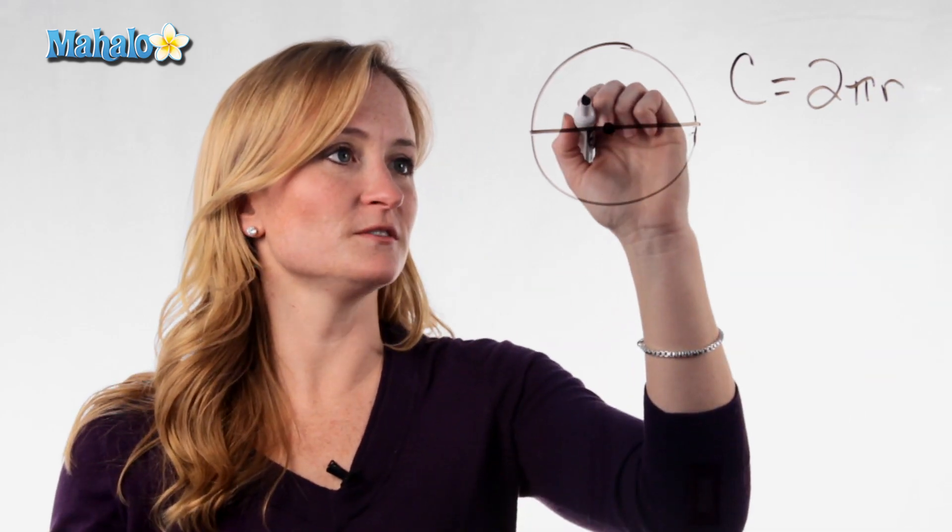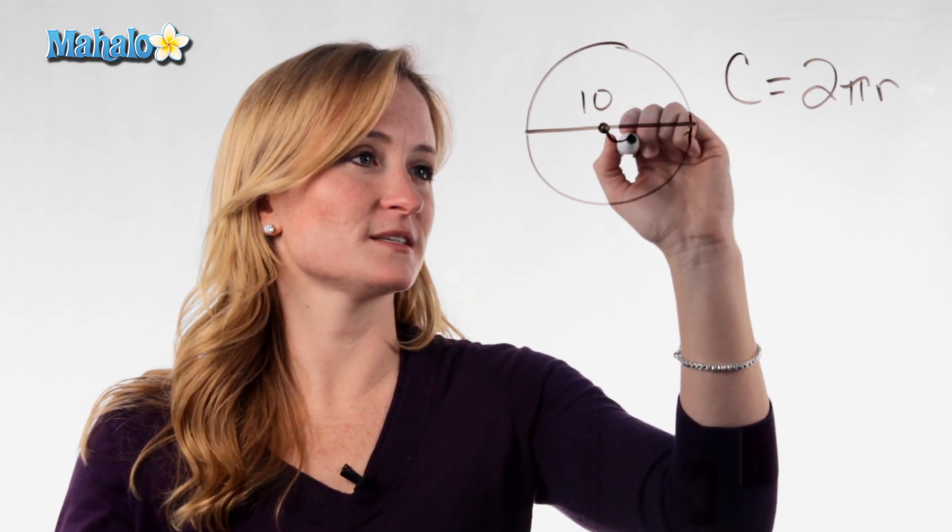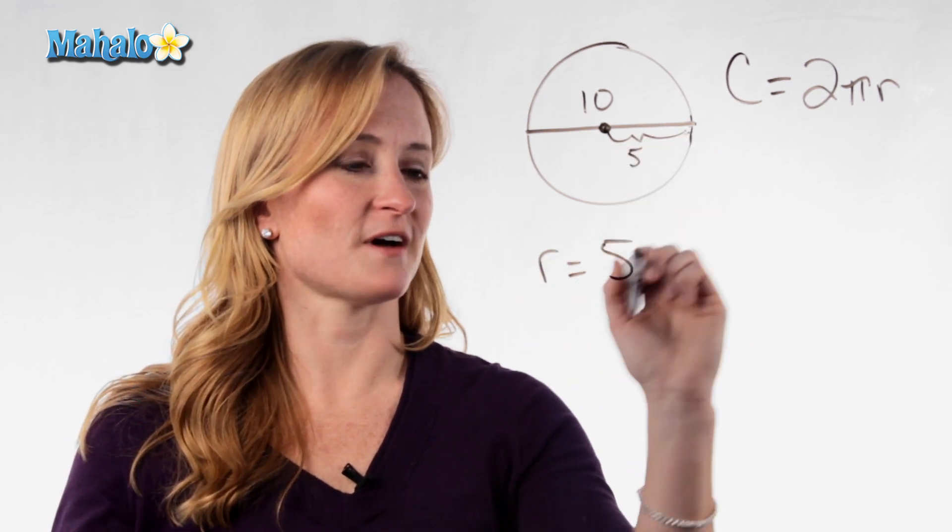So if this were your circle and you had a diameter of 10, you'd have to find the radius. We know that the radius is half of the diameter, so in this case, the radius would be 5.